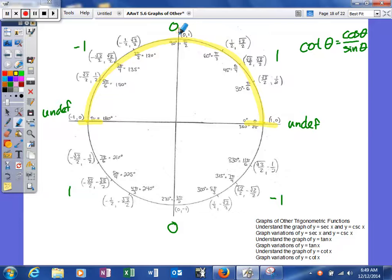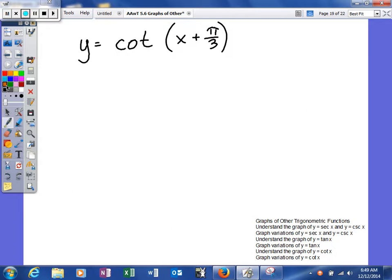So that's how we're going to graph our nice little cotangent. So let's see if we can't look at an example. So here's our first example. It says y is equal to the cotangent of x plus pi-thirds.